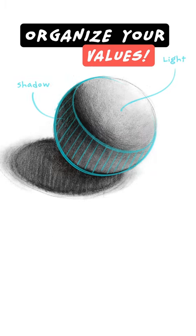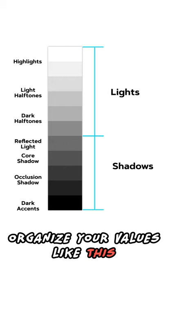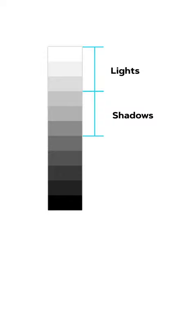The goal of shading is to clearly communicate the effect of light and form. Organize your values and use them correctly in your drawing. You don't have to organize your values like this — play around with it, add contrast, or even use limited values. But keep the relationship of your values organized and consistent throughout your drawing.